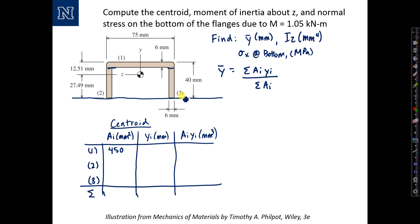y sub i is the distance from the reference axis to the centroid of area one. So I'll draw a little picture here for y one. The distance to the centroid of this thickness up here is going to be 40 minus half the thickness, which is three. So y one is going to be 37 millimeters.